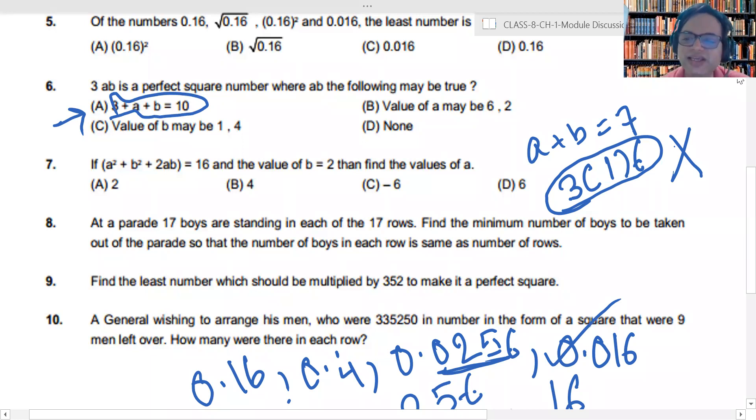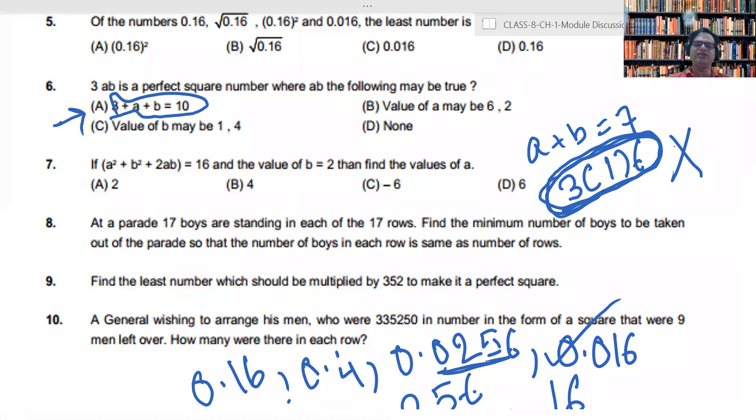So I am getting here three hundred and sixteen. Three hundred and sixteen, and I know that three hundred and sixteen is not a perfect square. A is equal to five, B is equal to two, then I will get three hundred and fifty two, which is also not a perfect square. Whatever value of A and B you will take, you can take other values also.